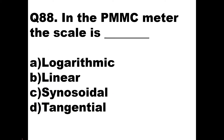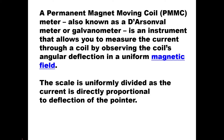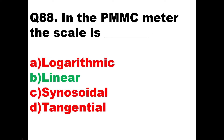Then we will go to the next question. In the PMMC — that is permanent magnet moving coil meter — the scale is of what type? Options are logarithmic, linear, sinusoidal or tangential. The answer is obviously linear. A permanent magnet moving coil PMMC meter is also known as d'Arsonval meter or galvanometer. It is an instrument that allows you to measure the current through a coil by observing the coil's angular deflection in a uniform magnetic field. The scale is uniformly divided — that is linear — as the current is directly proportional to the deflection of the pointer. So B, linear, is the answer.